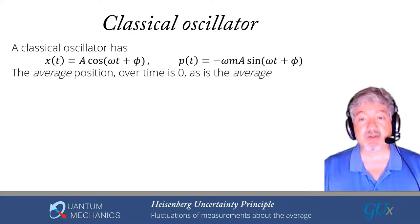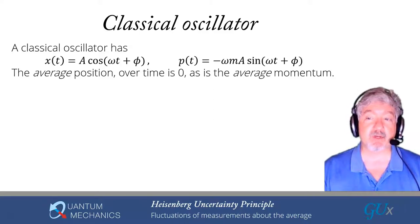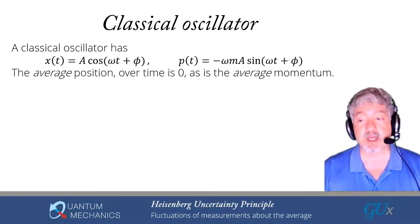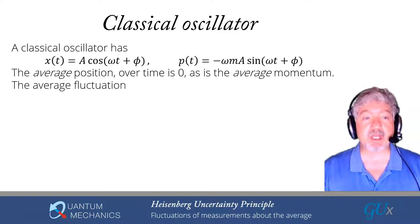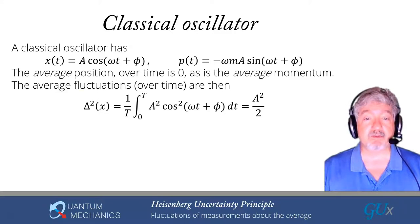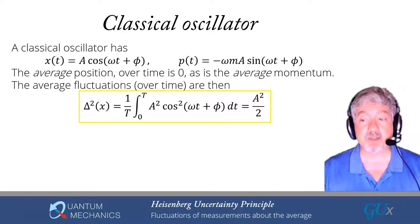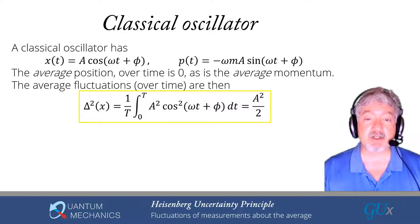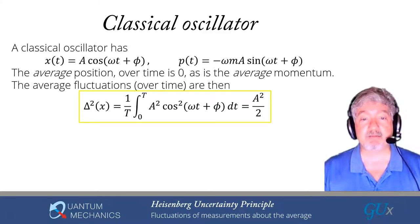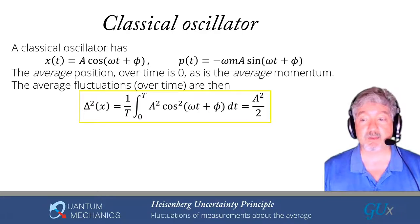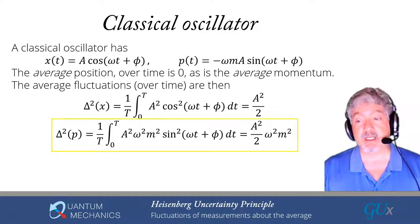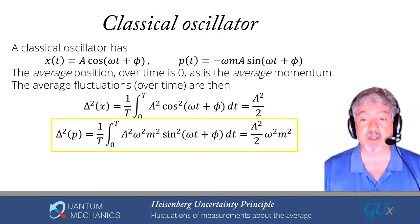We now look at averages and fluctuations as averages over time. The average value of cosine over a period is zero, and similarly for sine. The fluctuations delta squared of x equal the time average: one over T, integral from zero to T of a squared cosine squared omega t plus phi dt. As long as the integration range is an integer multiple of a half period, we replace cosine squared by one half, giving a squared over 2. Similarly for momentum, we get a squared times omega squared m squared divided by 2.